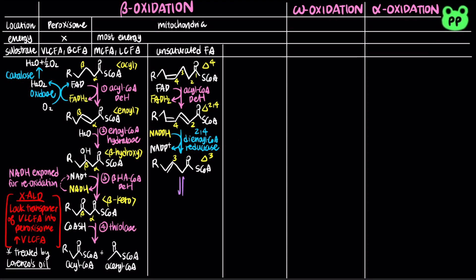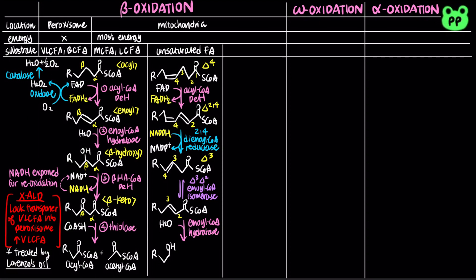Therefore, another auxiliary enzyme, delta-3-delta-2-enoyl-CoA isomerase, isomerizes trans-delta-3-enoyl-CoA to trans-delta-2-enoyl-CoA, which is the substrate for the second reaction in beta-oxidation, catalyzed by enoyl-CoA hydratase. The beta-hydroxy-acyl-CoA then continues with beta-oxidation.